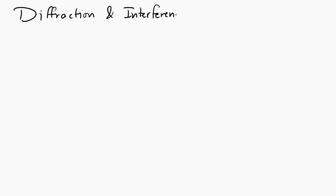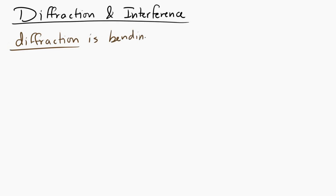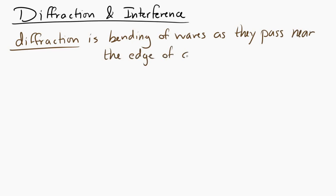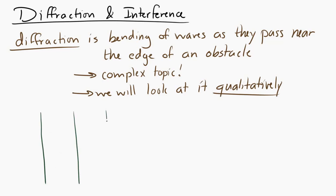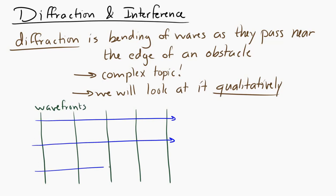Let's take a look at diffraction and interference of waves. Diffraction is the bending of waves as they pass near the edge of an obstacle. You can look pretty deeply into diffraction — there's a lot of mathematics that can be applied to describe it. But we're going to look at it qualitatively. Let's imagine that you have waves with aligned vertical wave fronts. The ray is pointing to the right, and it's going to encounter two walls with a gap between them. Diffraction is the bending of the waves as they pass near this obstacle.